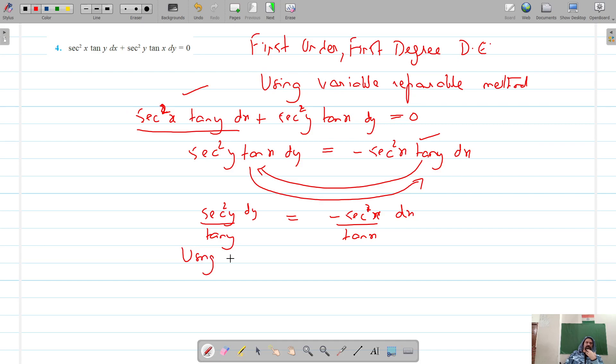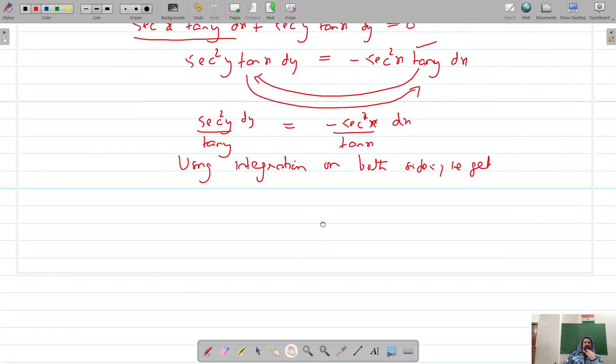Using integration on both sides we get, if you put on the integration sign, secant square y upon tan y into dy is equal to negative of secant square x upon tan x into dx.